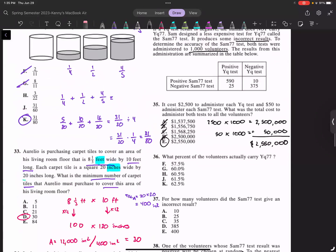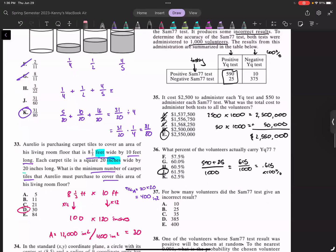Question 36: What percent of the volunteers actually carry YQ77? Now you're looking at the table. Remember, the positive YQ test is the one that's 100% accurate. I want to look at these because this is the one that's accurate, whereas this is where we're testing results. If I want to know how many volunteers actually carry YQ77, I don't care about the SAM77 because I know that's inaccurate. I want the one with 100% accuracy. How many volunteers? 1,000. It's 590 plus 25. Adding this up, you'd have 615 over 1,000, that's 0.615. Remember it's percentage, so multiply by 100% and 61.5% is the answer.